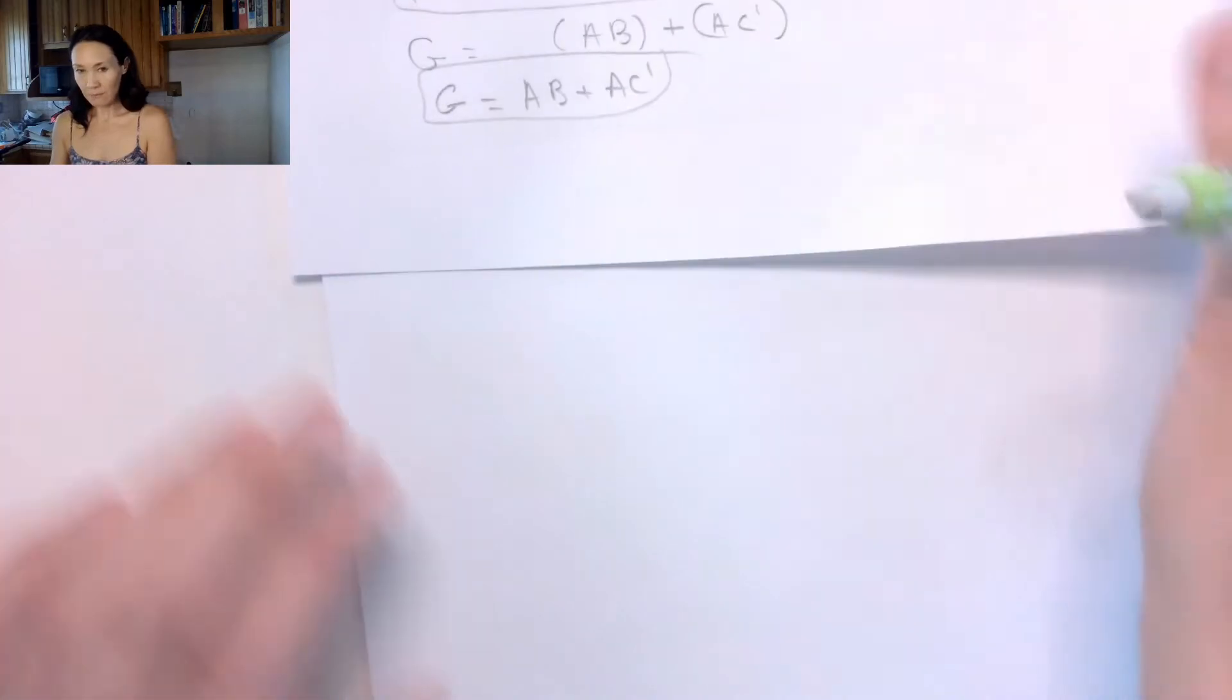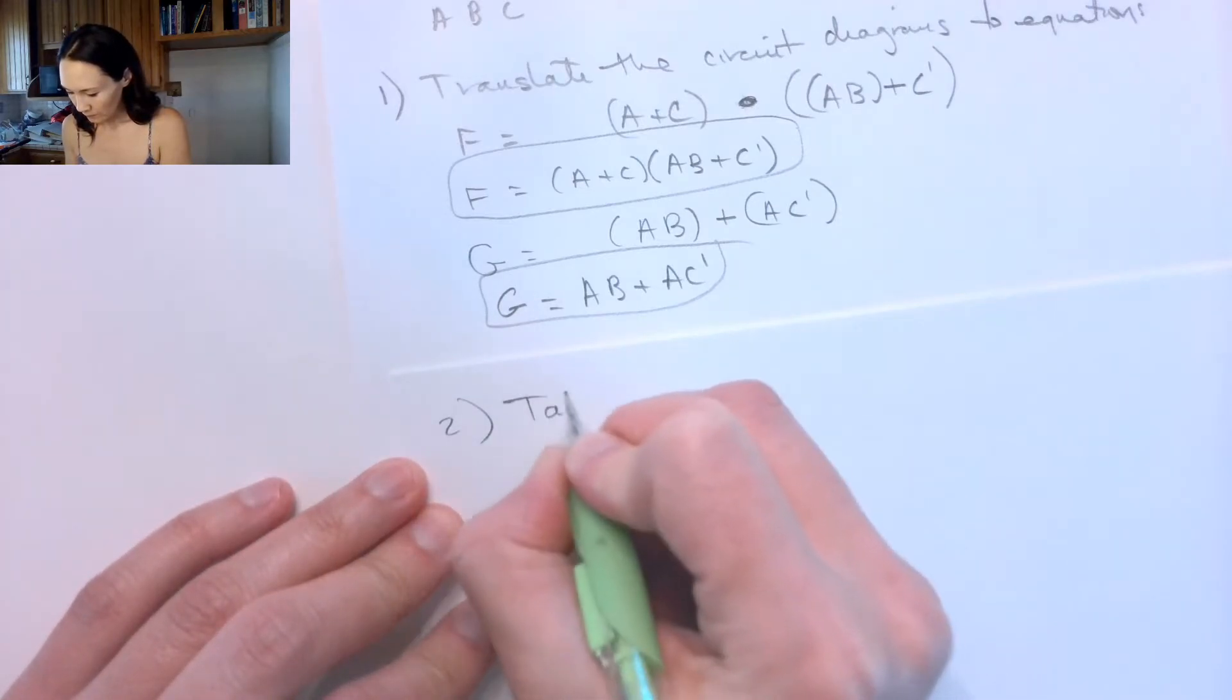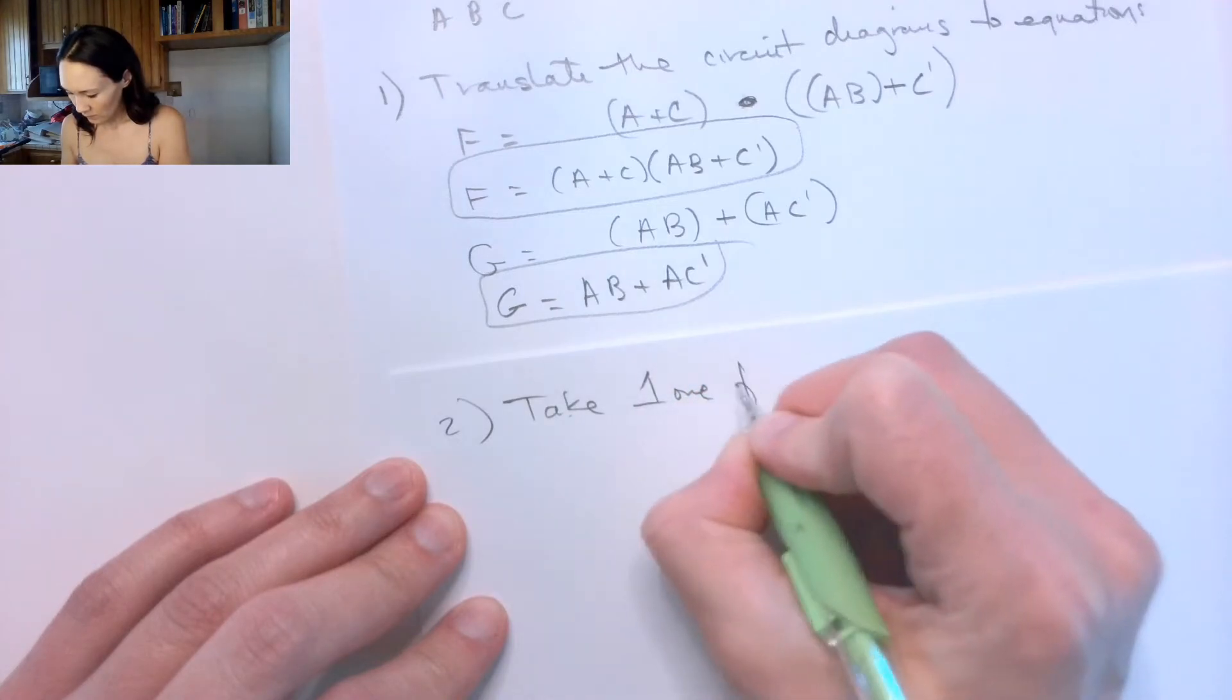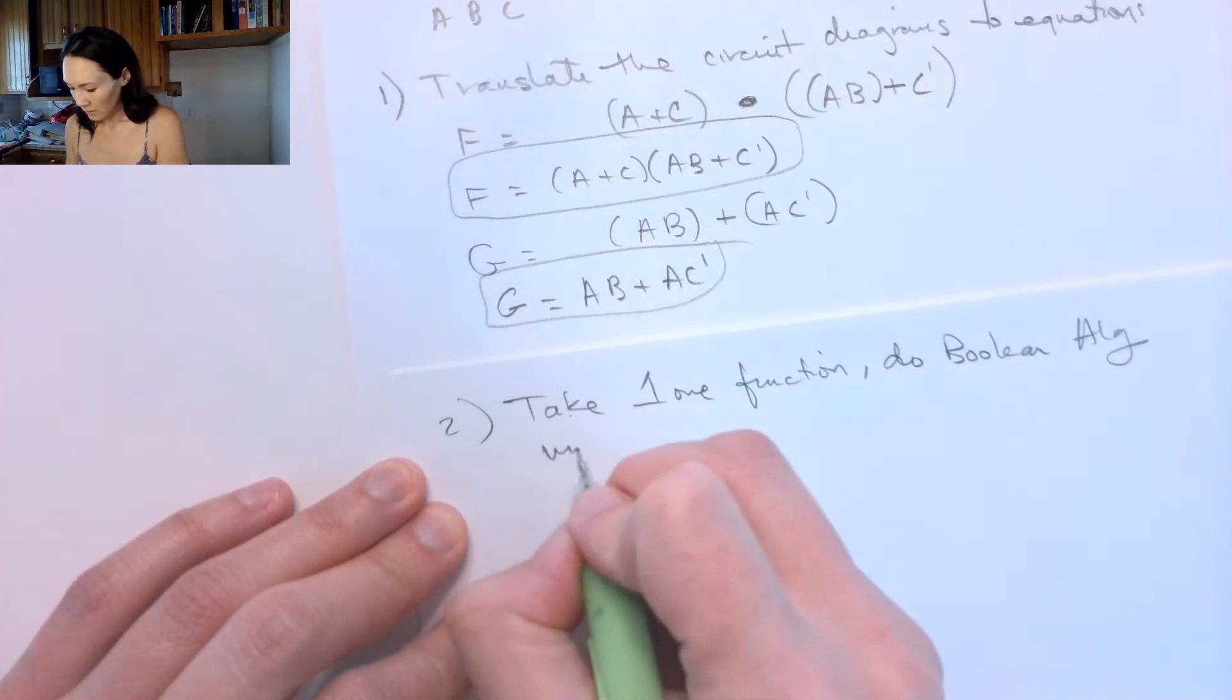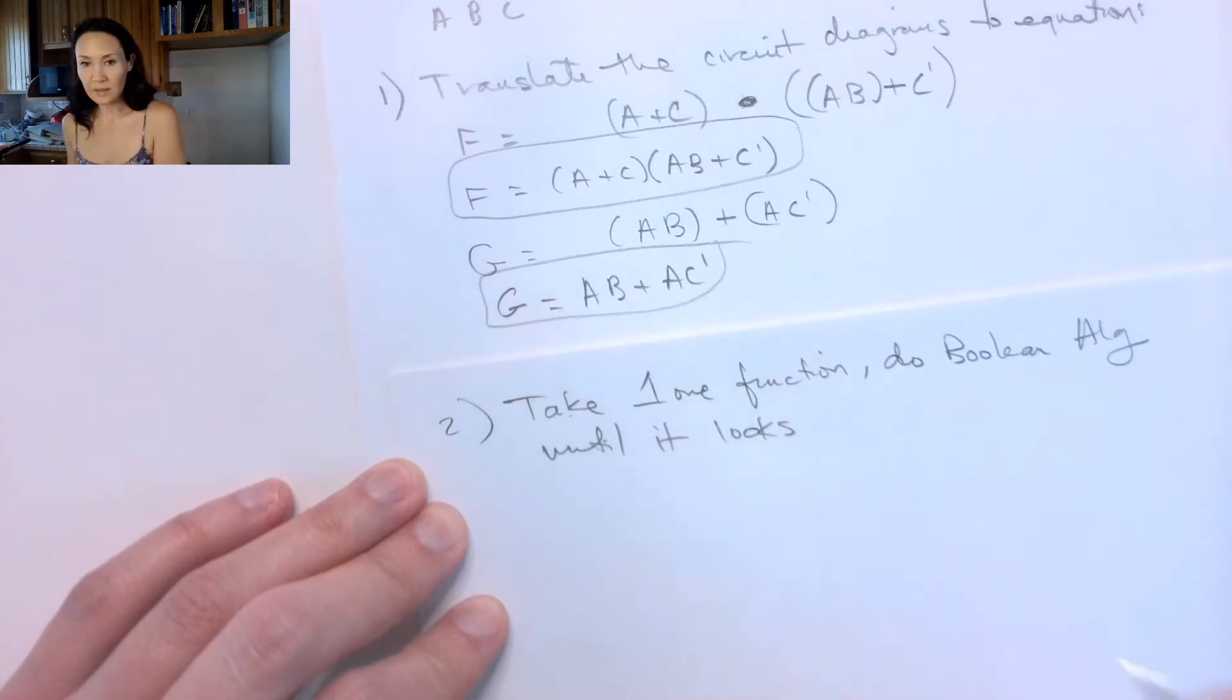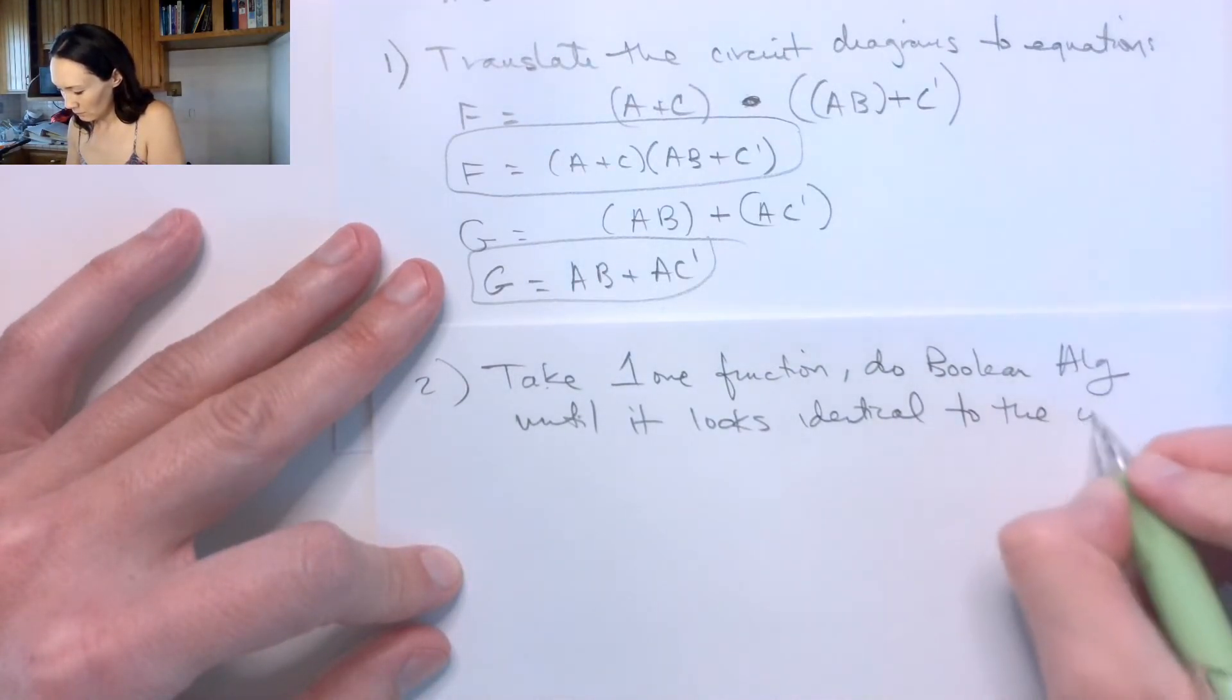So then the second step is I want to take one of these functions—not both, just one. And then I'm going to take one function and I'm going to do Boolean algebra on it until it looks identical to the other function.